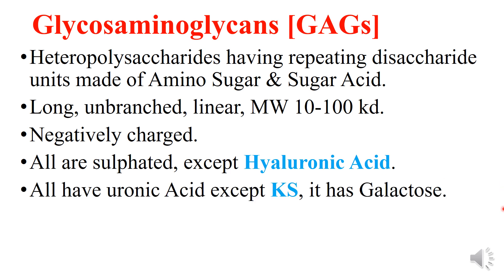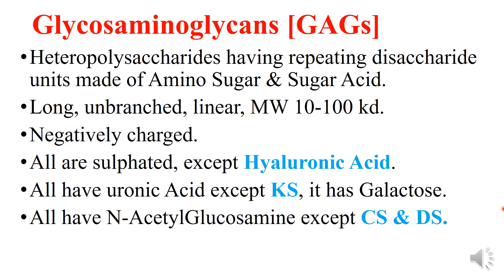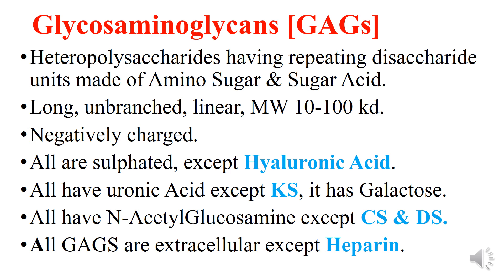except keratan sulfate, which has galactose instead of uronic acid. They all have glucosamine or N-acetyl glucosamine, except chondroitin sulfate and dermatan sulfate. All GAGs are extracellular, except heparin — it is the only intracellular GAG.